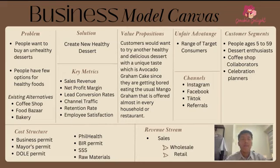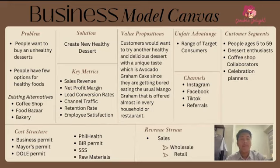Let's now talk about revenue streams — how the business will earn money throughout the venture. We see two revenue sources as of now, both from sales. First is retail, where we'll start off selling and testing the market and see where we can improve. The second is the big picture: selling our product wholesale — probably to coffee shops. These are the two things we project will produce income for our venture.